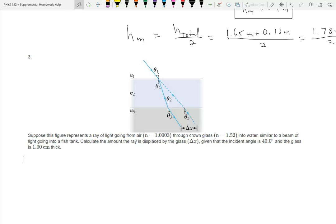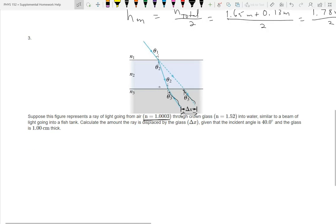So here we have, suppose the figure represents a light ray going from air, and notice this is being very particular. We have N1 is 1.0003, not just 1.00 like we've been using, through crown glass, that's 1.52, into water. Water. What's the N3 fracture? Water. No. No. Water is about 1.33. So this is like water going into a fish tank. So calculate the amount of ray displaced by the glass, delta x. So that is, we're calculating, this is the path the light would have taken. This is the path that actually takes how far over has it shifted.